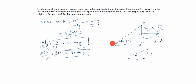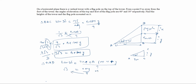For triangle BAD, tan 60° equals opposite over adjacent. The opposite is DC plus CB, which is x plus y, divided by 9. tan 60° equals √3, so √3 = (x + y)/9, giving us 9√3 = x + y. Since y = 3√3, we have 9√3 = x + 3√3.